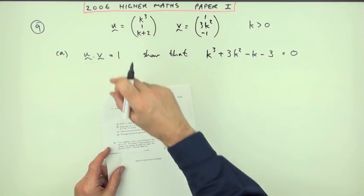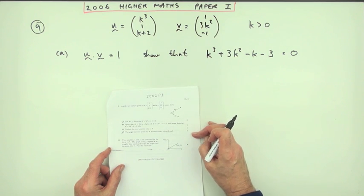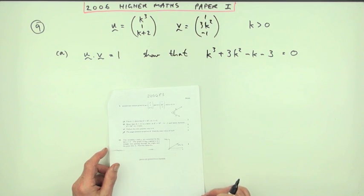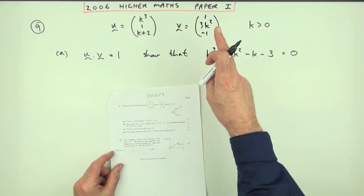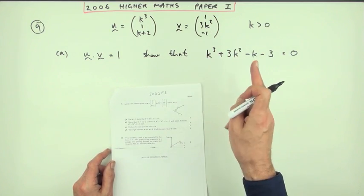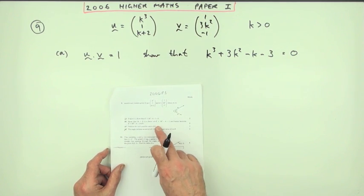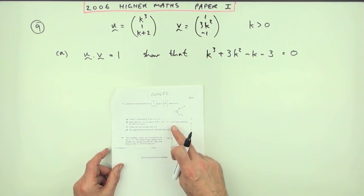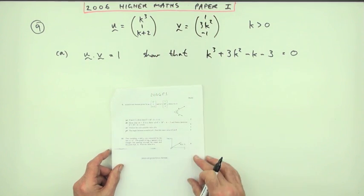Number nine from the 2006 Higher Maths paper one — a big question, 11 marks altogether. It brings in a few things: vectors, the angle between vectors, scalar products, and the business about factorizing cubic expressions. The first part, for two marks, gives two vectors and says if the scalar product is one, show that a certain equation applies.